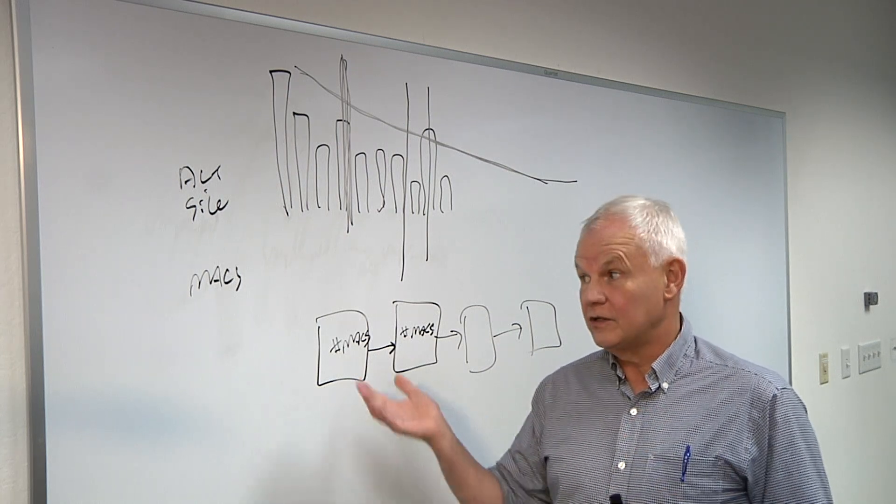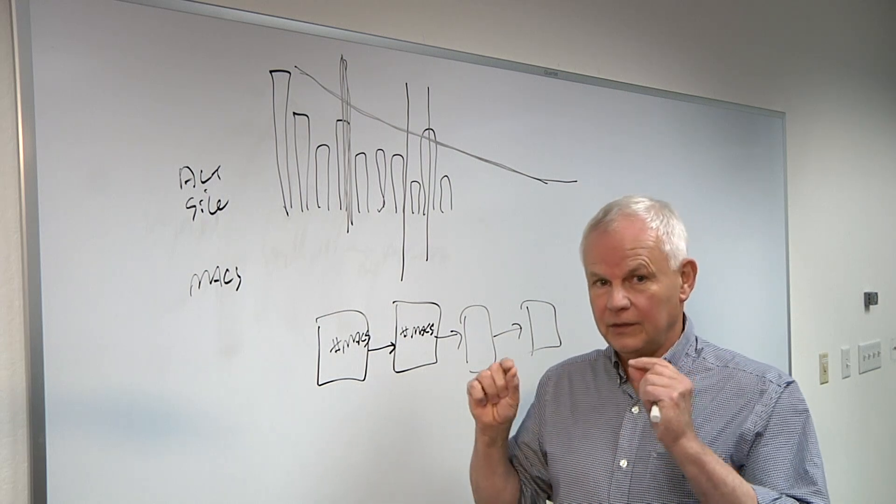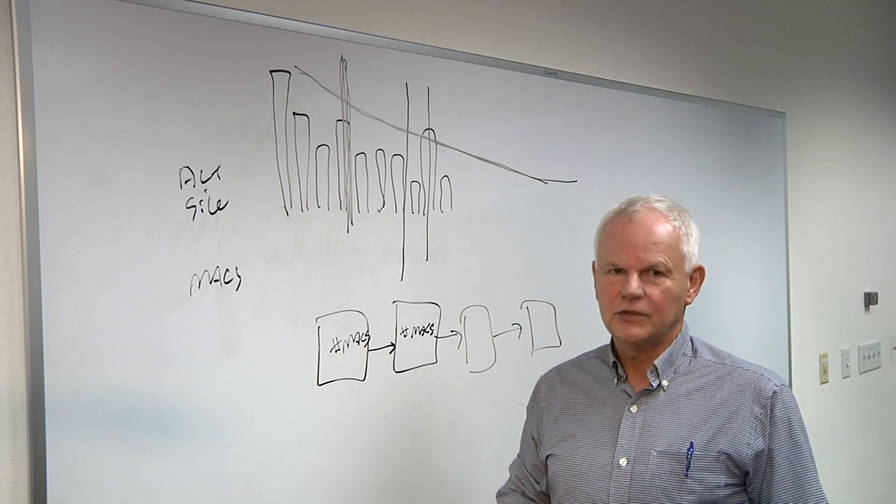And when you do things like quantize to run an integer mode, which is what you do in edge computing, you're giving up a little bit of prediction accuracy for the higher throughput. So, yes, there is a trade-off there.